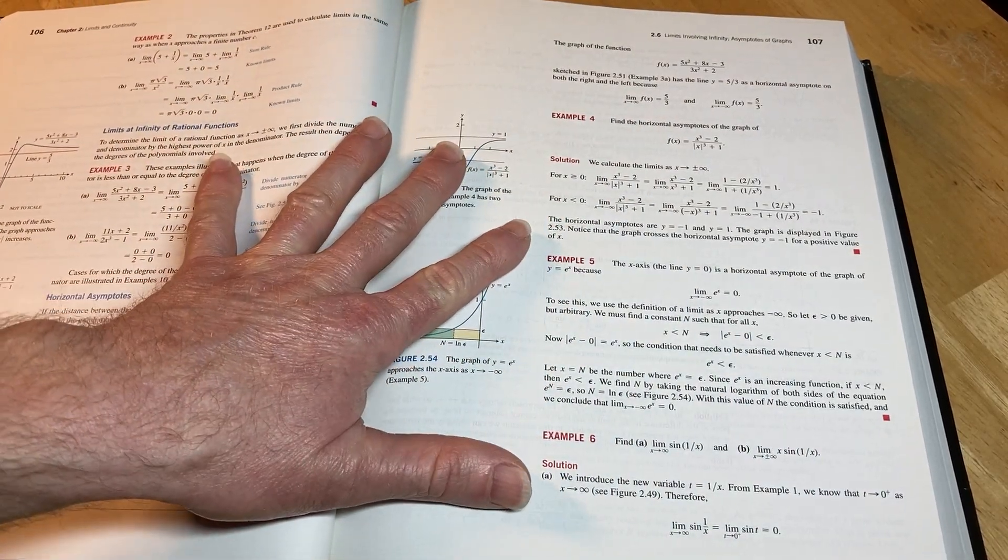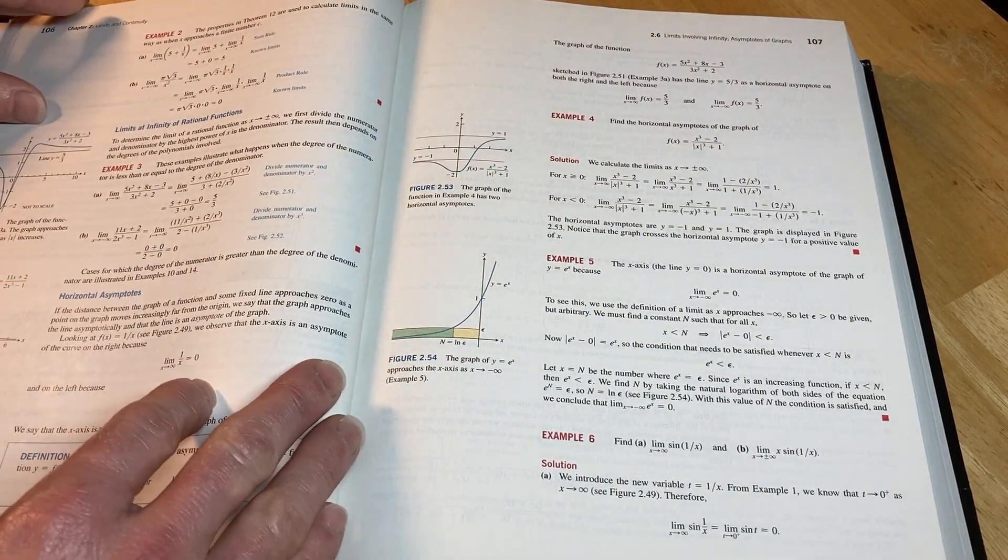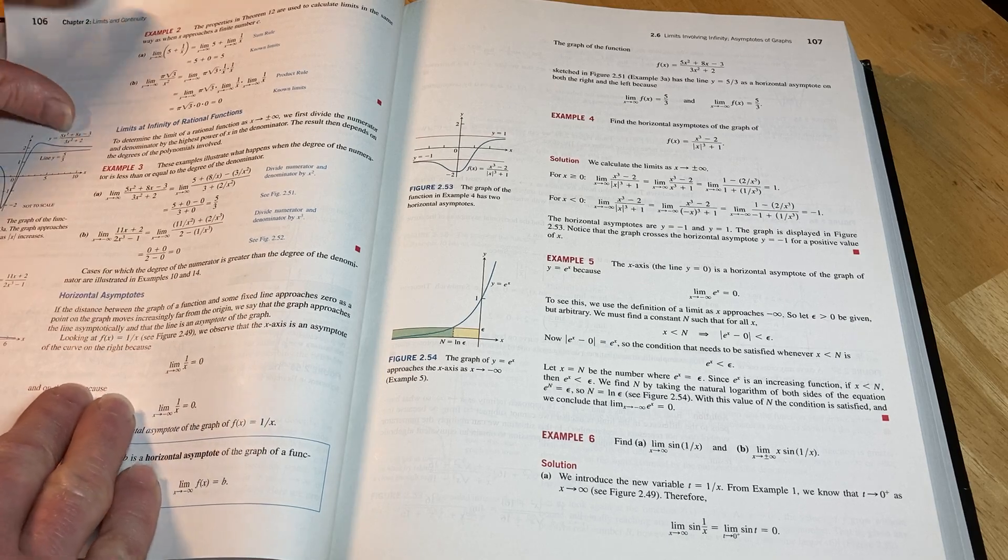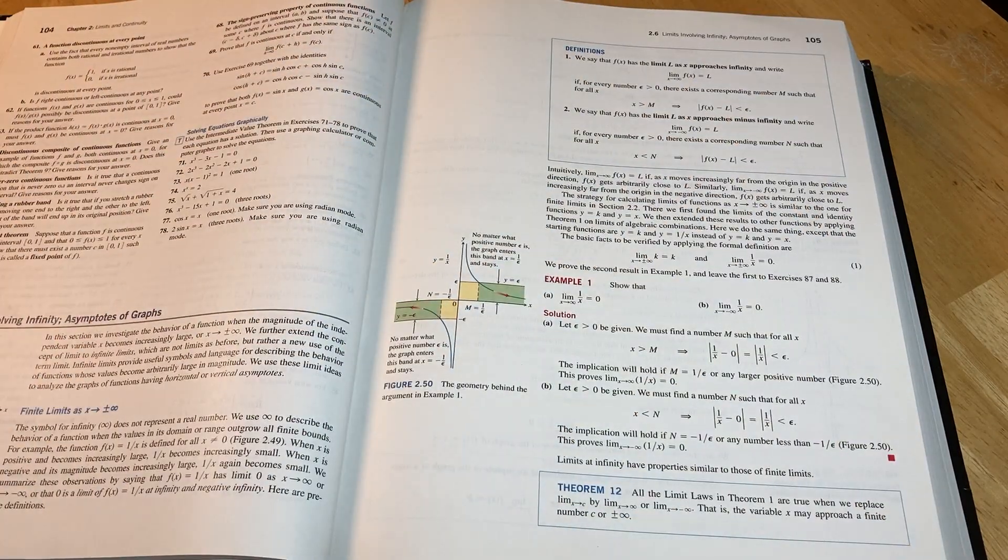So I'll leave a link in the description so you can check out this book if you want to. But look at all these examples. So this is 2.6, limits involving infinity.